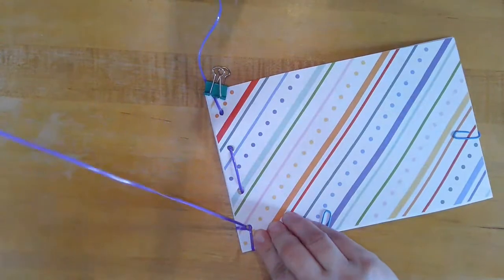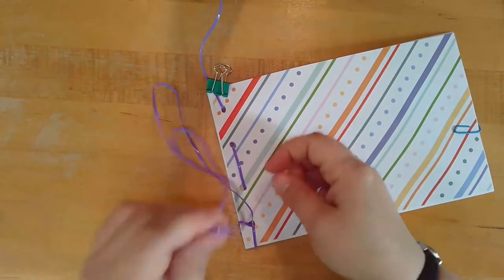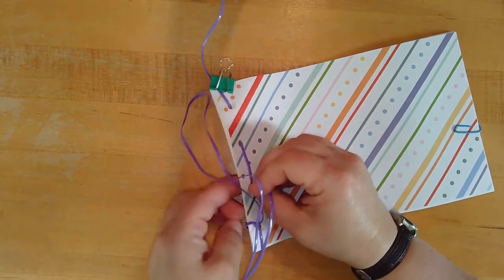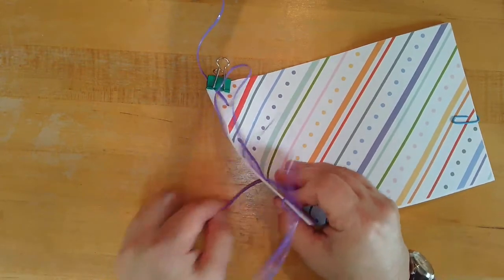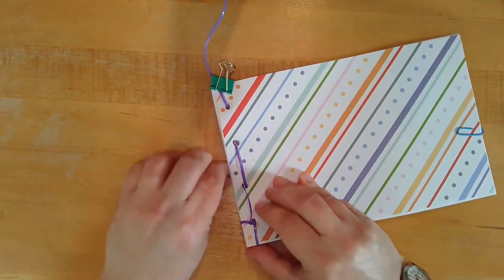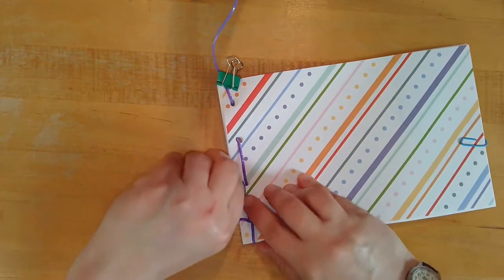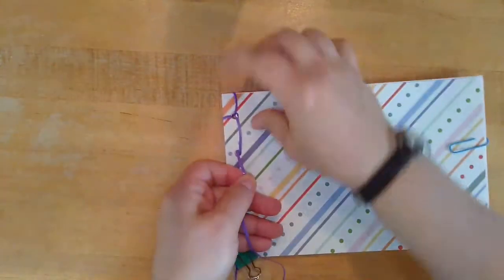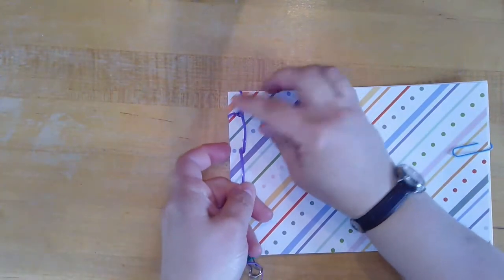You can flip your project over at this point, and we're going to move down to the second from top hole, bringing it through the back to the front. Again, making sure the string is lying flat. Flip your notebook over. Your string should be in the front of your project.